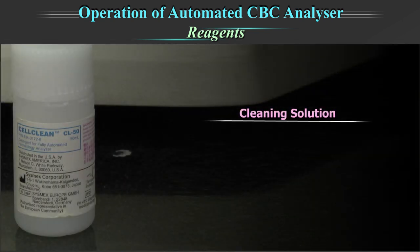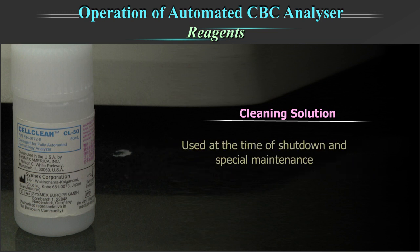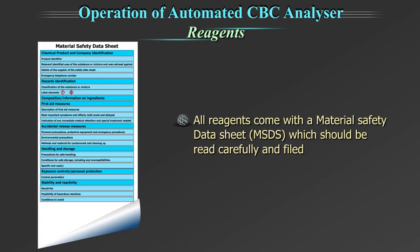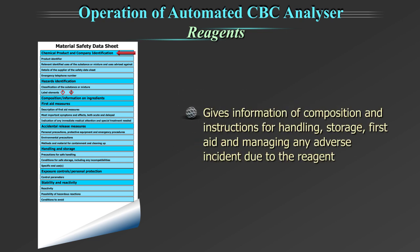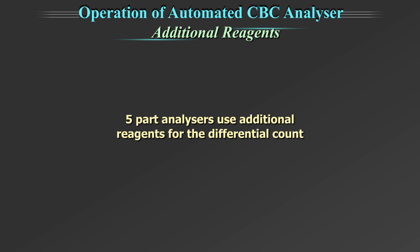The cleaning solution — for example, cell clean — is used to clean the instrument. It removes residuals of lysing reagent, cellular residues and blood proteins from the hydraulic systems, detector block, block aspiration tube and flow cell. It is used at the time of shutdown and special maintenance. All reagents come with a material safety data sheet (MSDS) which should be read carefully and filed. It gives information on composition and instructions for handling, storage, first aid and managing any adverse incident due to the reagent.